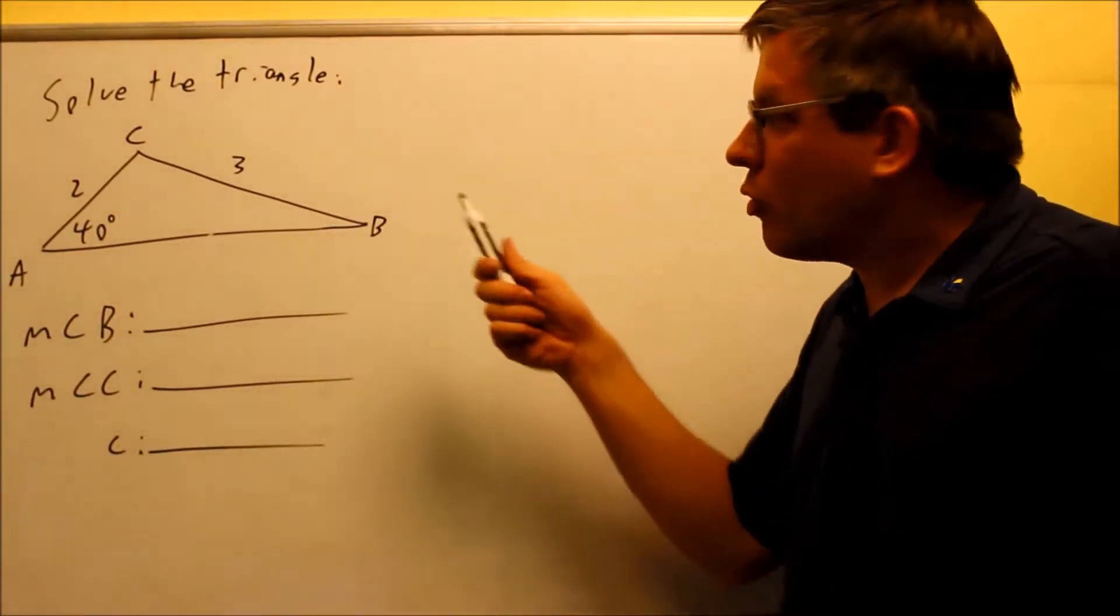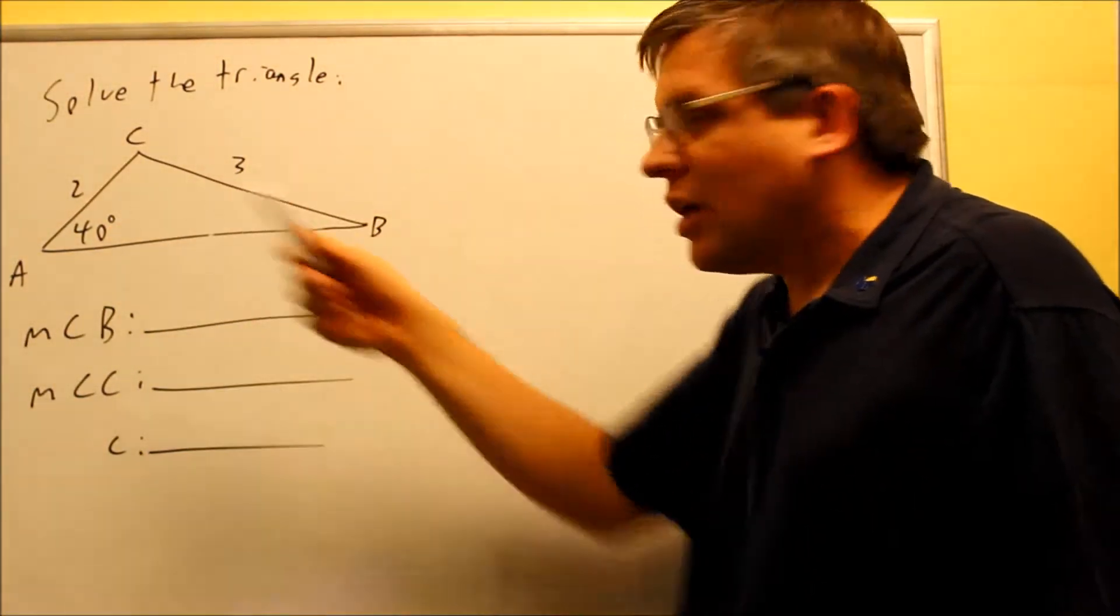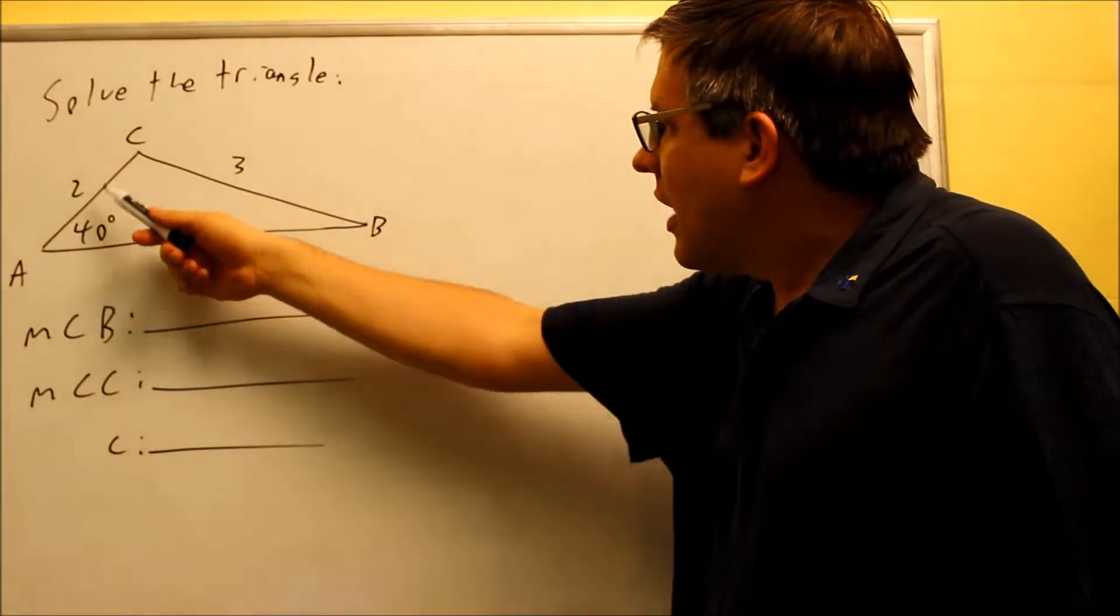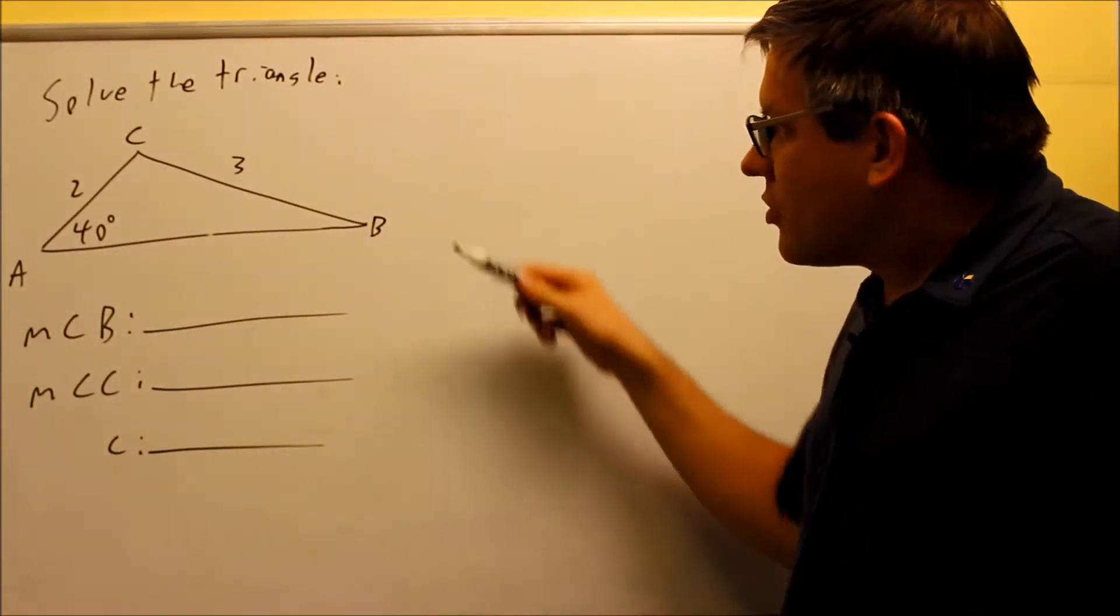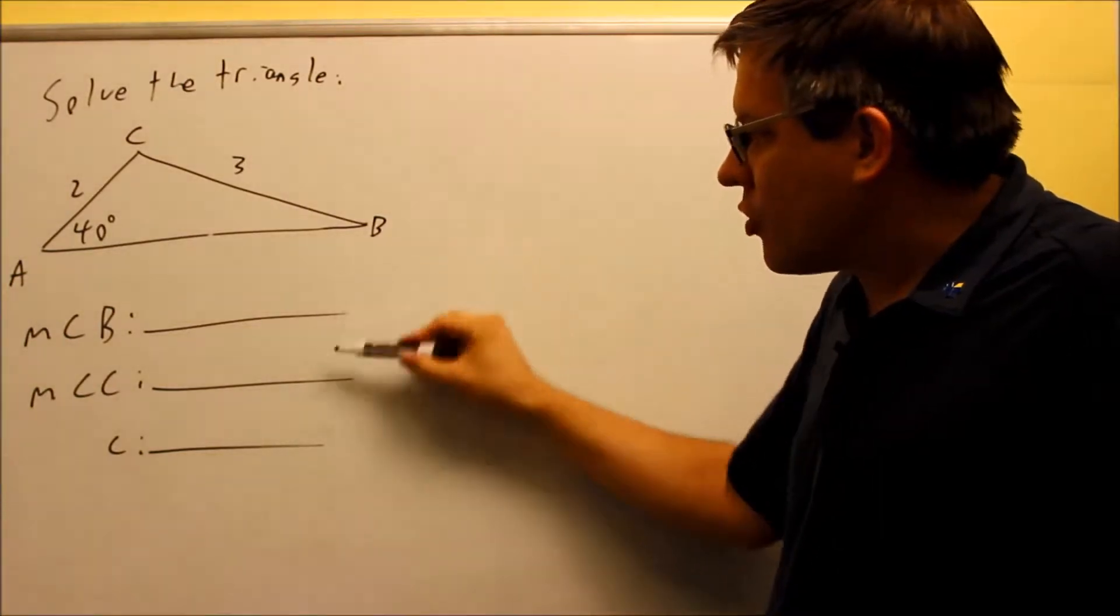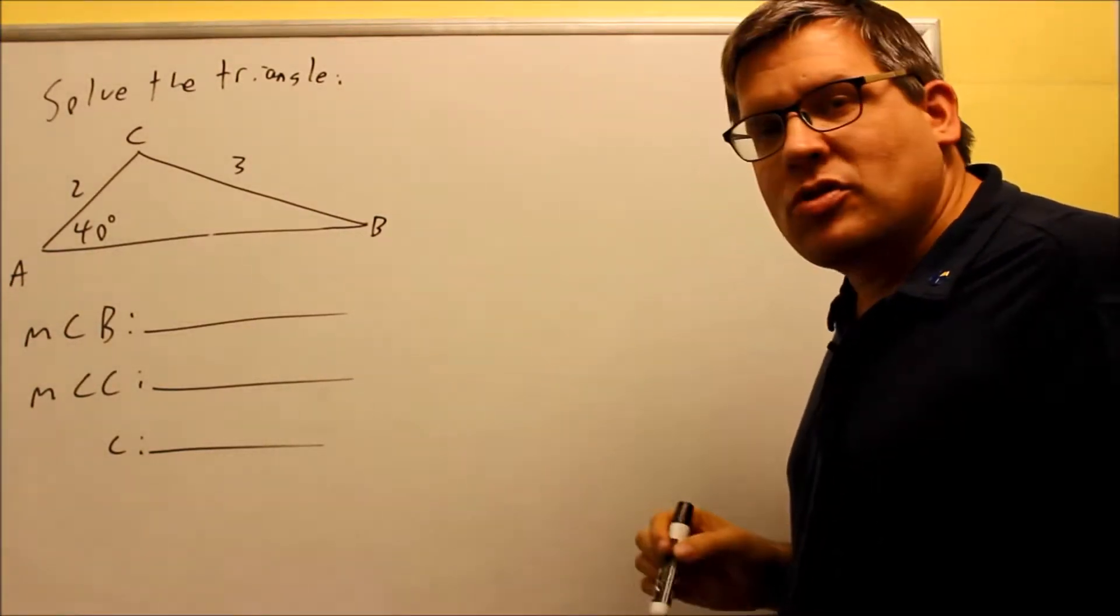Okay, for this problem we have a situation where we have two sides and a given angle. So this is going to be SSA or side-side-angle situation. Because of this, we have to solve for two angles this time and a missing side.